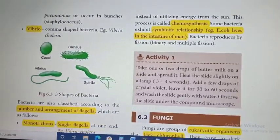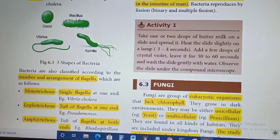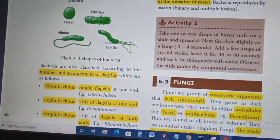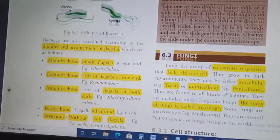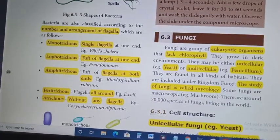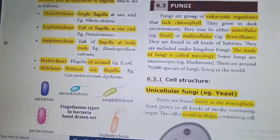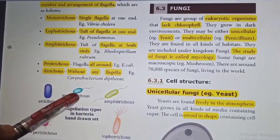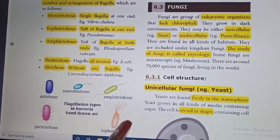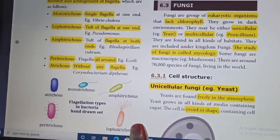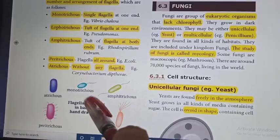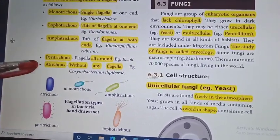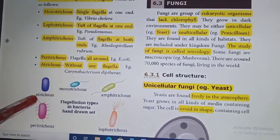Bacteria are also classified into five types according to the number and arrangement of flagella: Monotricus — with only a single flagella; Lopotricus — with a tuft of flagella at one end; Amphitricus — flagella at both ends; Peritricus — flagella all over the body; and Atricus — without any flagella.